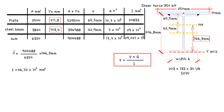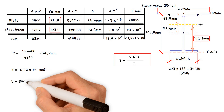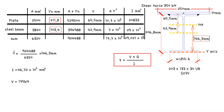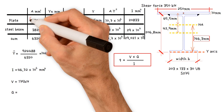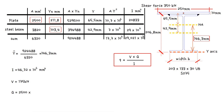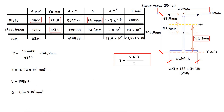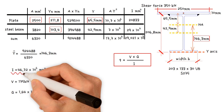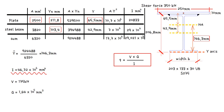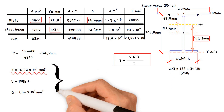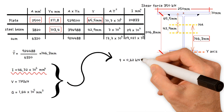Now we can work out the shear flow and determine the required fillet weld. V is the shear divided by 2 because we have 2 welds, so 350 kN divided by 2 equals 175 kN. Q is then equal to the area of the plate, 2,500 mm², multiplied by the distance from the neutral axis to the plate's centroid, 65.5 mm, giving 1.64 × 10⁵ mm³. We've already calculated the moment of inertia for the entire section as 46.72 × 10⁶ mm⁴. Therefore, the shear flow equals 0.62 kN/mm.